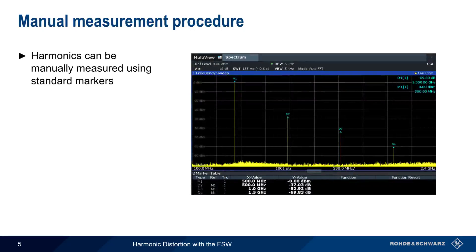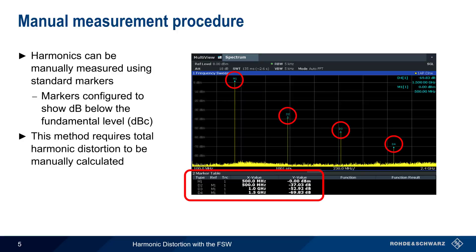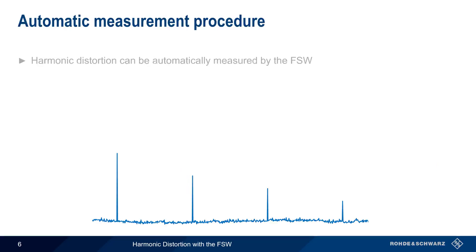The standard spectrum markers on the FSW can be used to measure the levels of the fundamental and the harmonics. Markers are normally configured as delta markers to show the difference in level relative to the fundamental. In this example, the second harmonic is about 37 dB down from the fundamental, and the third harmonic is about 53 dB down. Note that this method does not automatically calculate total harmonic distortion, which is a somewhat non-trivial task. Another drawback to the manual method is that it's both very time-consuming and prone to error or measurement inaccuracy.